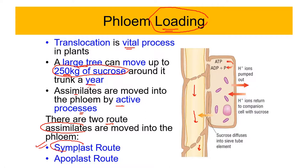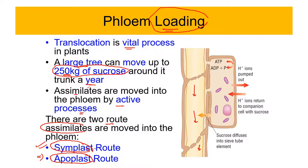The apoplast route involves movement across the cell wall — the movement of organic compounds and assimilates through the cell wall. The symplast route involves movement of assimilates through the cytoplasm. These are the two routes plants use for the purpose of translocation.